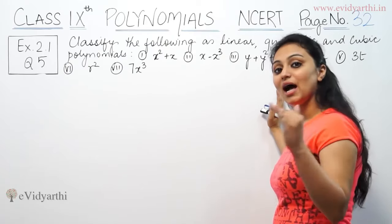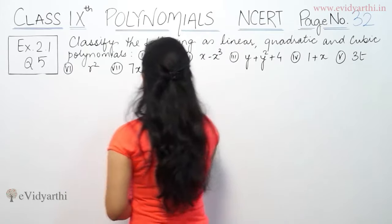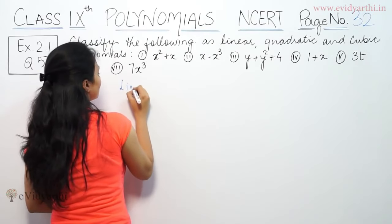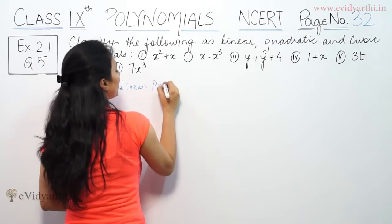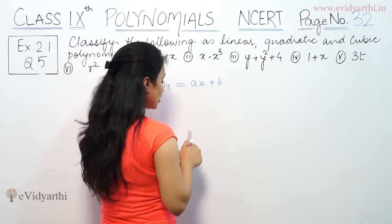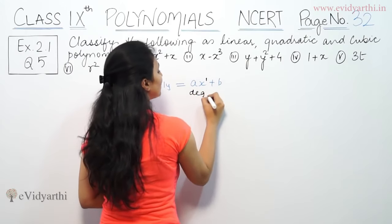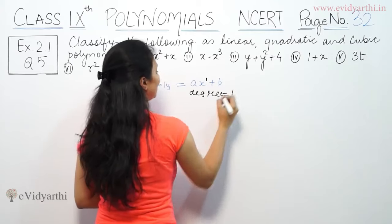We have polynomials given. Let me tell you which one is linear, which one is cubic, and which one is quadratic. First of all, linear polynomials. Linear polynomials are in the form of ax plus b. That means whose highest power is 1, whose degree is 1. Those are linear polynomials, degree is 1.